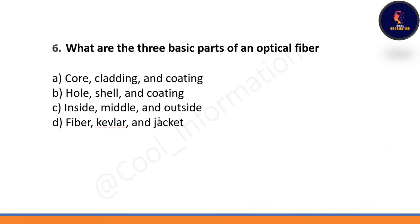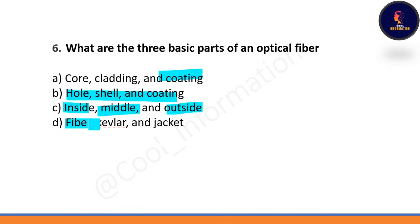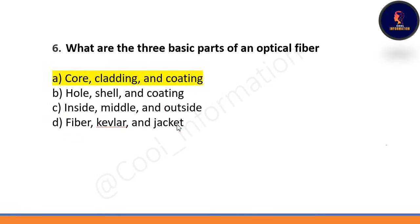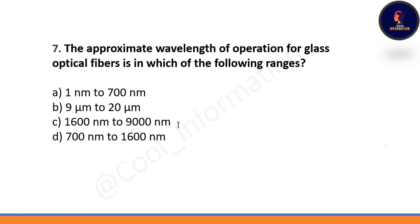Next question: what are the three basic parts of an optical fiber? Option A: core, cladding and coating. Option B: hole, seal and coating. Option C: inside, middle and outside. Option D: fiber, kevlar and jacket. Correct option is A — core, cladding and coating are the three basic parts of an optical fiber.